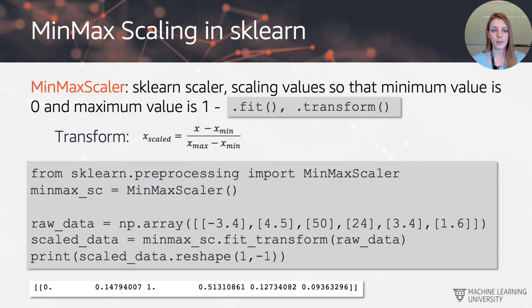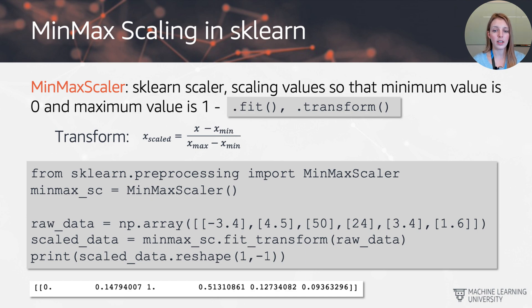The MinMaxScaler identifies the minimum and maximum value for any given column, then subtracts the min from each value and divides by the difference between max and min. In code, we initialize the MinMaxScaler and apply fit_transform in one step to perform our scaling.